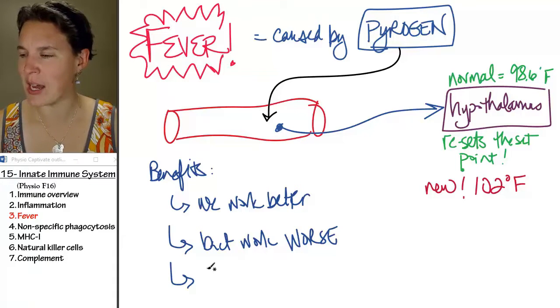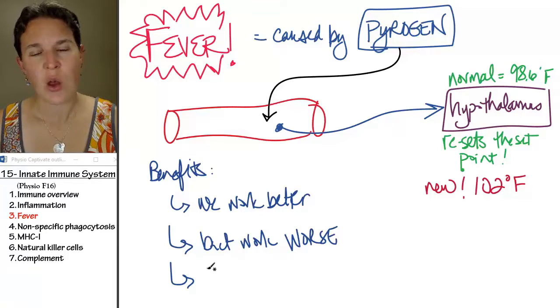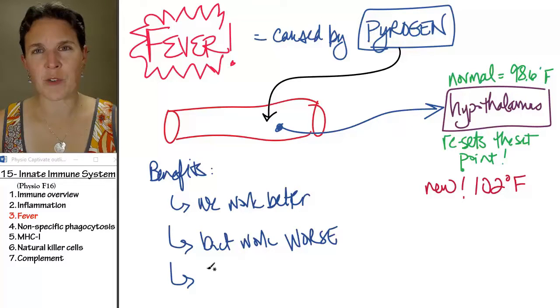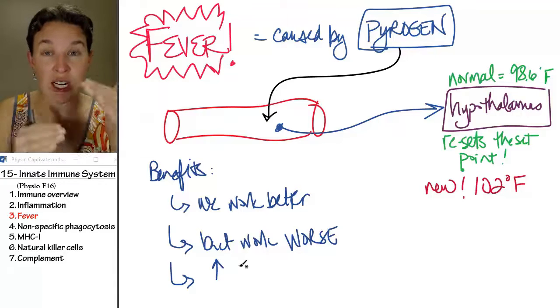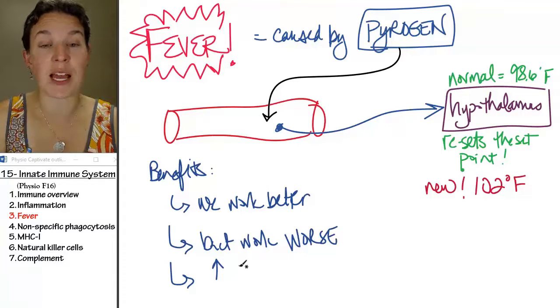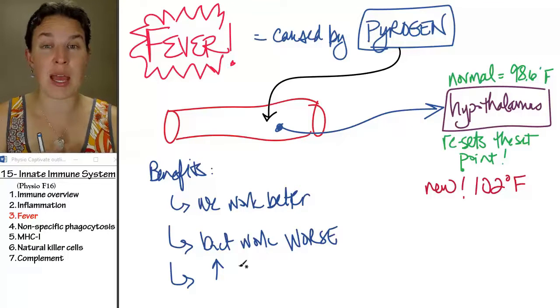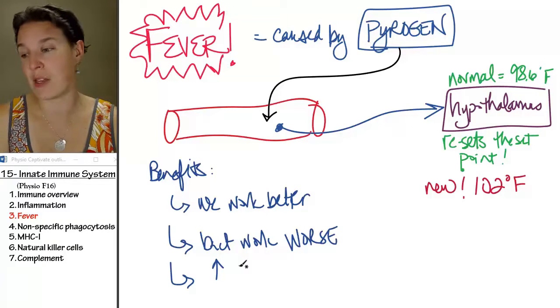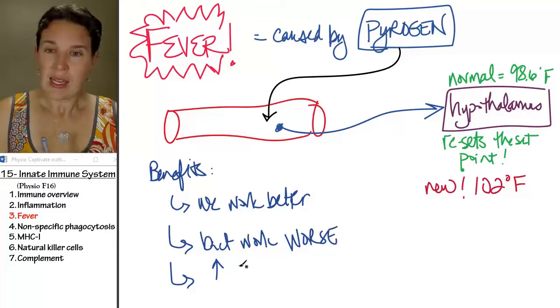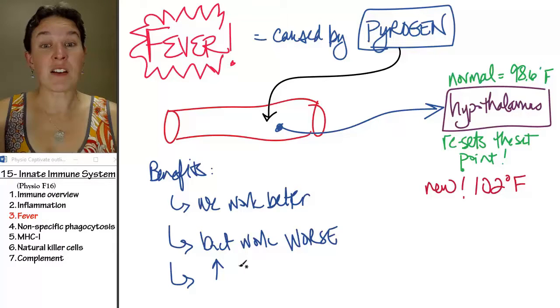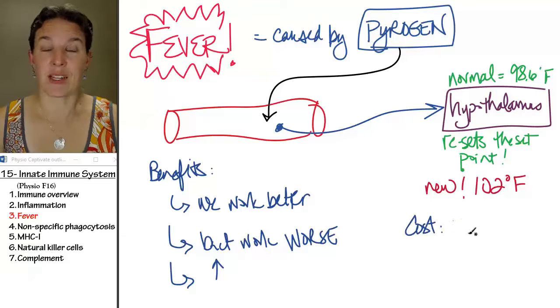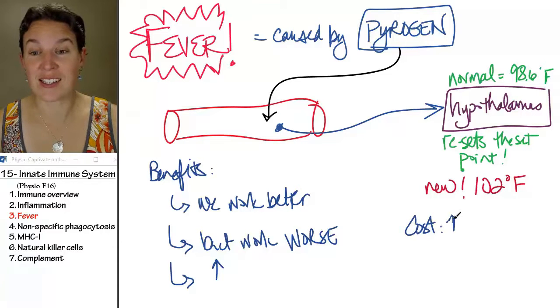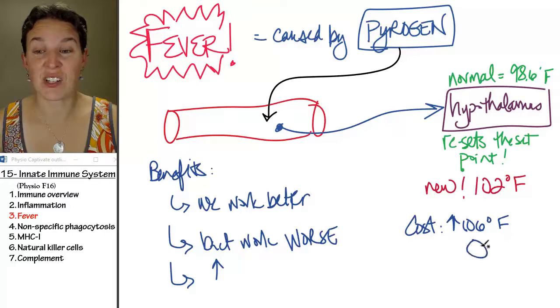They decrease plasma ion concentrations, which I'm not sure what the mechanism for that is, but those changing ion concentrations in the plasma affect the bacteria or the pathogen's ability to infect you. So the cost, if you get above 106 degrees Fahrenheit, you're going to die.